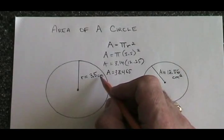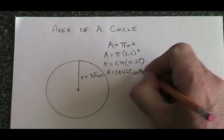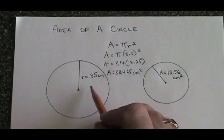The unit of distance was centimeters, so the unit of area will be centimeters squared. This is the area of this circle.